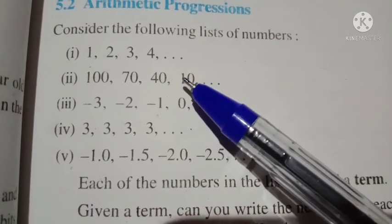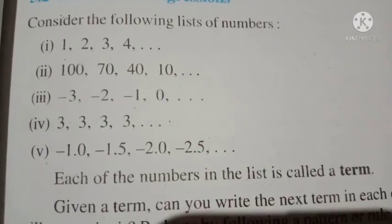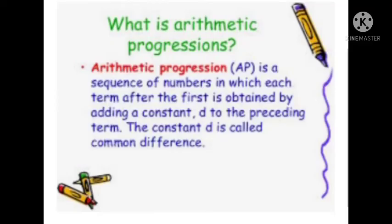In this chapter, we will discuss how to check whether a given sequence is an arithmetic progression or not. We can define arithmetic progression or AP as: a sequence of numbers in which each term after the first is obtained by adding a constant D to the preceding term. The constant number D is called the common difference. In each progression, each number is a term, and the fixed number is known as the common difference.